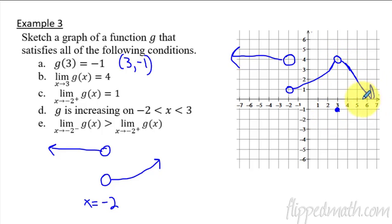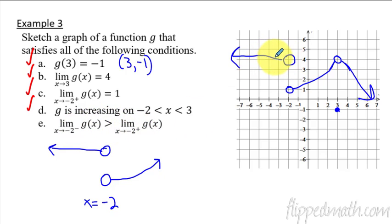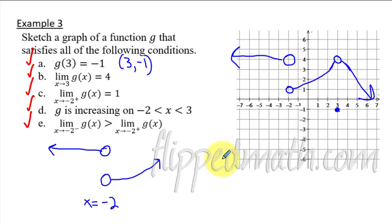Now let's verify all conditions are met. g of 3 equals negative 1 — there's a dot there, check. The limit as x approaches 3 equals 4 — both sides come together at y equals 4, check. The right-sided limit at negative 2 equals 1 — it does, check. g is increasing from negative 2 to 3 — the graph goes up the whole time, check. The left side of negative 2 is higher than the right side — it is, check. Sometimes as you go through these you'll discover something is wrong and need to fix it. That's it for this lesson — rock that mastery check, and I'll see you in the next one!